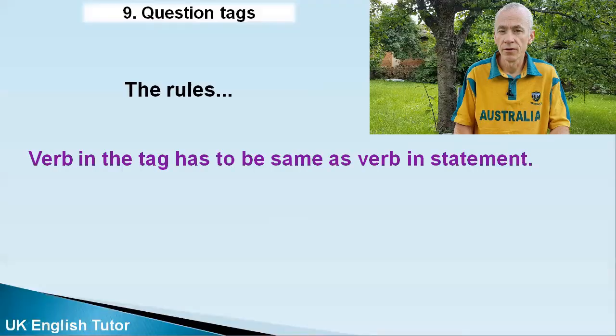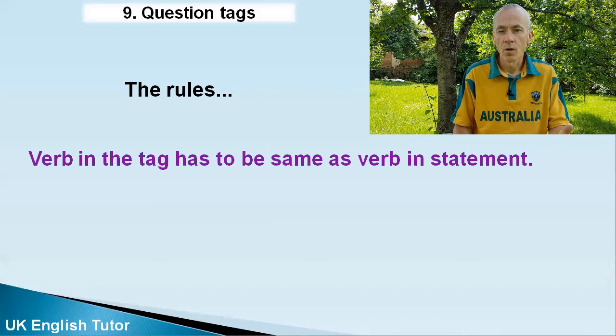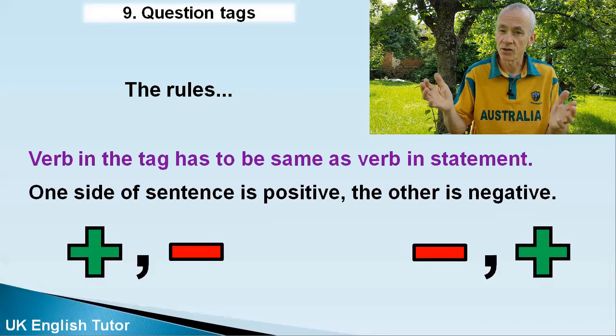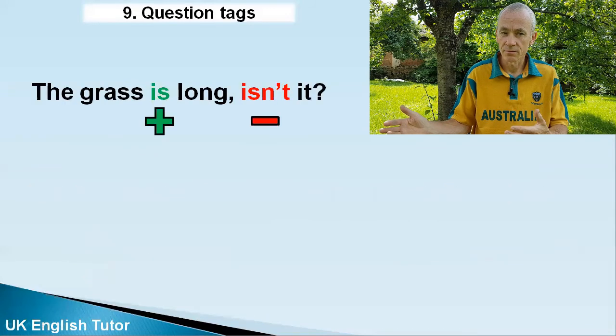It's the tag that changes the statement into a question, and the two parts are separated by a comma. 'The grass is long at the moment' — it's a statement. To make it a question, you have to add a tag. Here are the rules: the verb in the tag has to be the same as the verb in the statement. In 'the grass is long,' the form of the verb 'to be' is 'is,' so I have to use that. Also, one side of the tag question is negative and the other is positive. 'Is' is positive, so I have to use the negative 'isn't.' So: 'The grass is long, isn't it?'